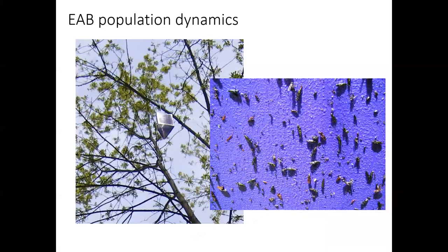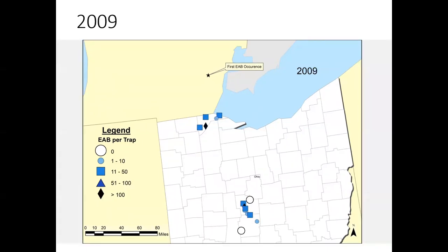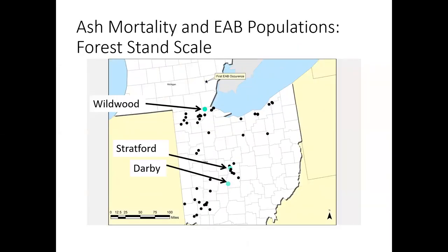We also monitored emerald ash borer population dynamics using purple traps in a subset of the sites. In 2008 in northwest Ohio, we had pretty high populations of emerald ash borer, while central Ohio had mostly low populations. As the ash populations crashed in northwest Ohio and that food source was eliminated, you see the populations of emerald ash borer decreasing in northwest Ohio but increasing in central Ohio. Then those populations decrease again in central Ohio as they eliminate their food source. We'll zoom in on three sites: Wildwood, Stratford, and Barbee.